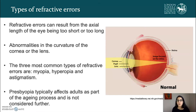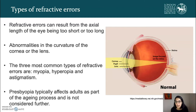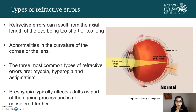The refractive state of the eye is determined by the cornea, the lens, anterior chamber depth, and axial length of the globe. The three most common types of refractive errors are myopia, hyperopia, and astigmatism. Presbyopia typically affects adults as part of the ageing process and we won't consider this further. We'll start with hyperopia and astigmatism and then go into more detail about myopia.